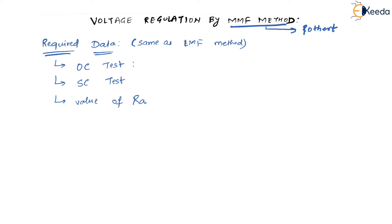The OCC characteristics are nothing but the open circuit voltage VOC (phase value) versus field current IF. So these are VOC versus IF characteristics. As we keep increasing IF, VOC will also keep increasing, and as we decrease IF, VOC will also decrease.